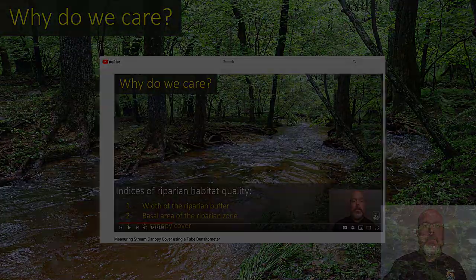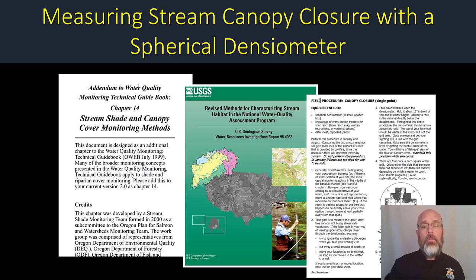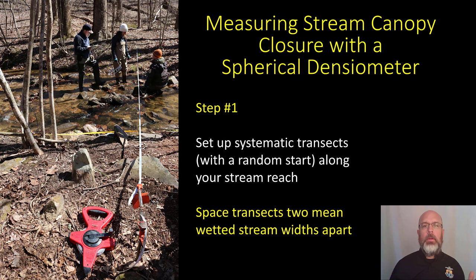There are multiple protocols out there for using a spherical densitometer. I would pick the protocol that meets your needs and objectives for your particular experiment. Today we're just going to go over one protocol. This is a multi-step process. Step one is to set up random transects on your stream reach, starting with a random start and spacing them two mean wetted stream widths apart — so multiply your wetted width by two and space your transects accordingly.